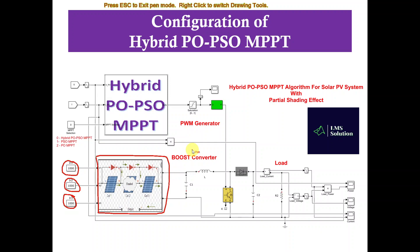In order to overcome this problem, we can combine PO with PSO. By combining them, it will solve the problems of both PO-MPPT and PSO-MPPT — meaning it can find the global maximum power point. For that purpose, we go for the hybrid PO-PSO MPPT.